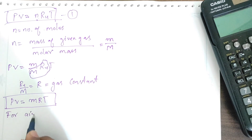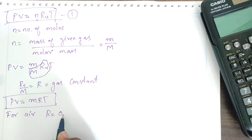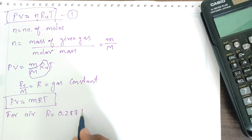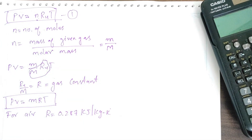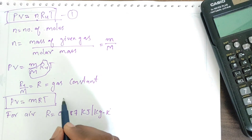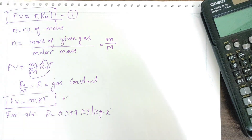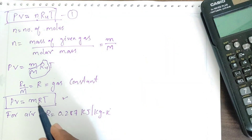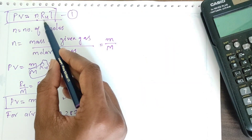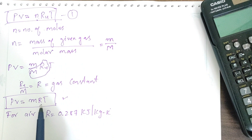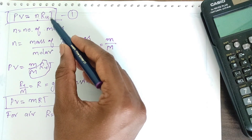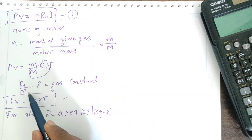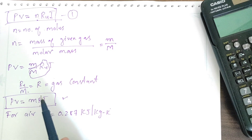For air, the value of R is 0.287 kilojoule per kilogram per Kelvin. Note that R_U is the universal gas constant, while R is the specific gas constant. Dividing the universal gas constant by the molecular mass gives the specific gas constant R.